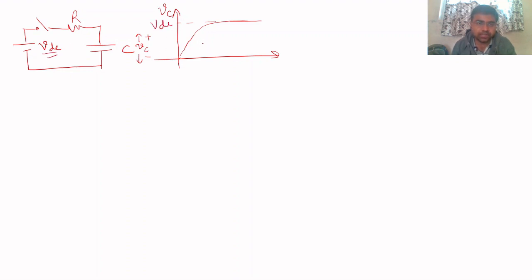This will be the response. Now we have to find out which mathematical equations govern the transient response of this voltage VC. So here let's say the current through this loop is I.